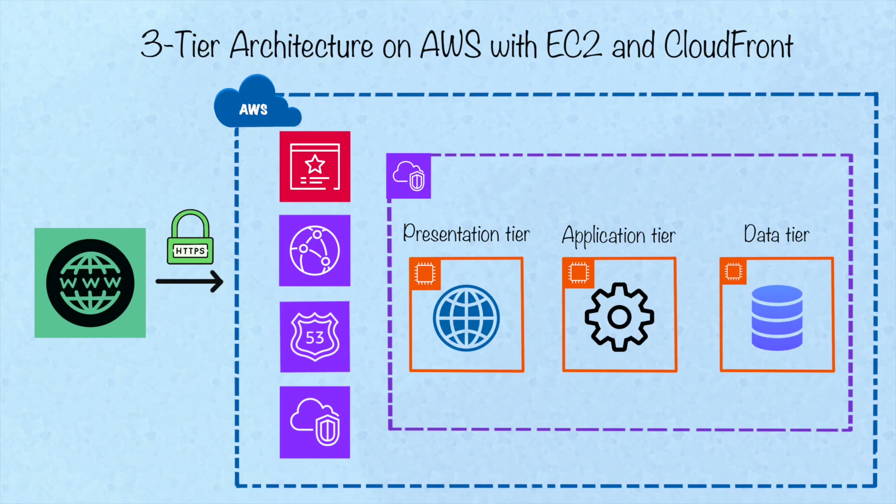We started with a very basic setup using EC2 instances. From there, we'll enhance the architecture step-by-step, moving towards a more complex, production-ready application. If you haven't watched that first video, I highly recommend checking it out. You can find the link to that video above and also in the video description below. So, assuming you've already watched the previous video, let's get started.